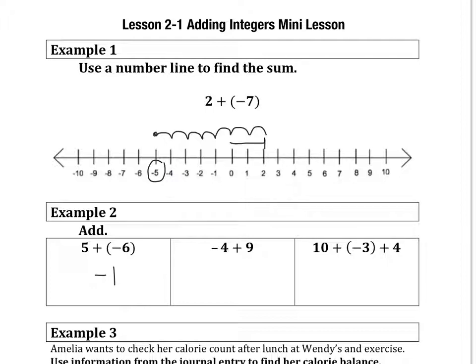So we're going to do the same strategy with the second one. Negative 4 plus 9, they're opposites, so we're going to subtract and keep the sign of the larger. 9 take away 4 would be a positive 5.